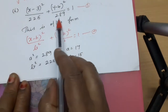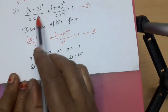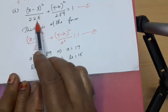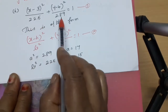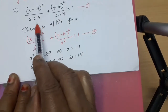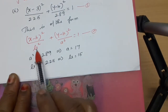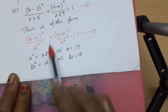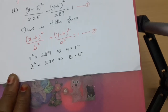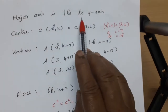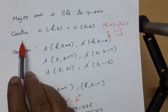Properly understand: a square is the largest denominator value. Since the denominator of x is the smallest value — 225 compared to 289 — the major axis is along the Y axis. So b squared equals 225 and a squared equals 289, giving a equals 17 and b equals 15. The major axis is parallel to the Y axis.